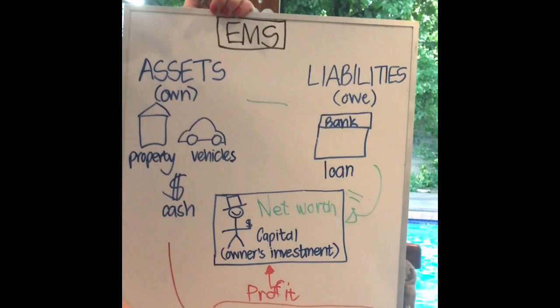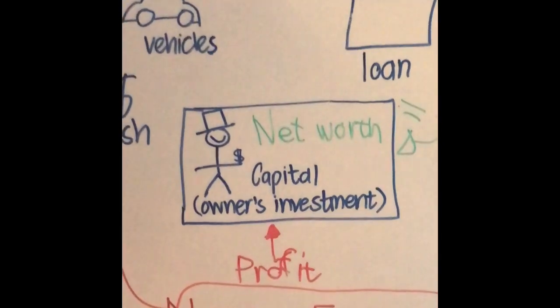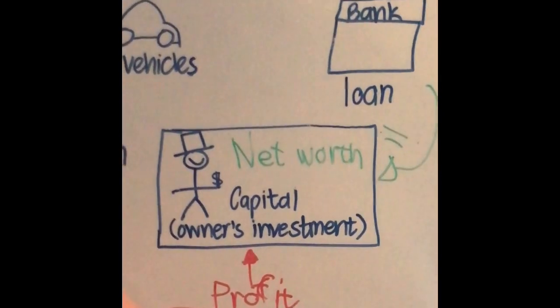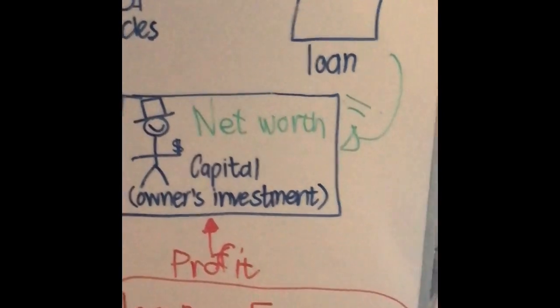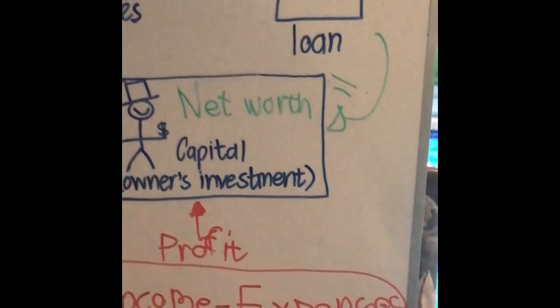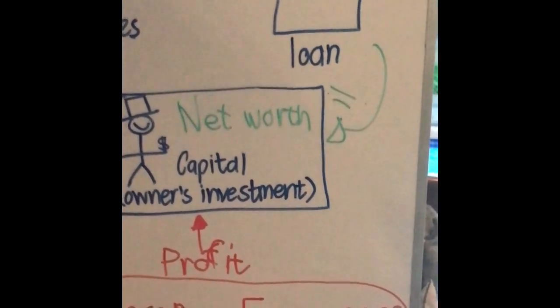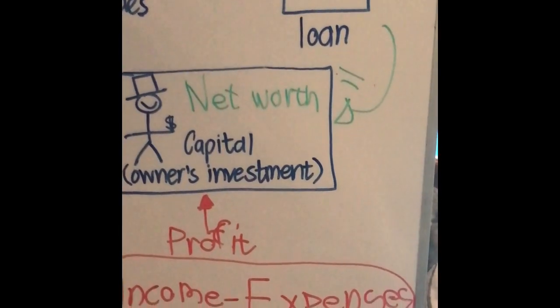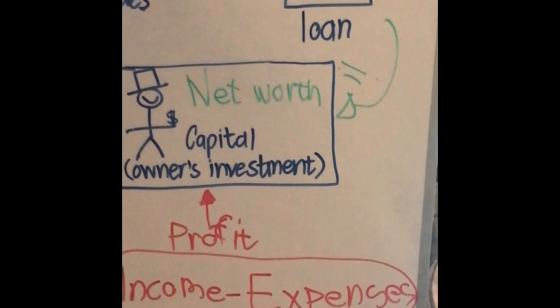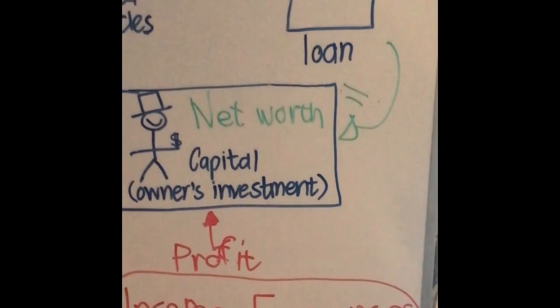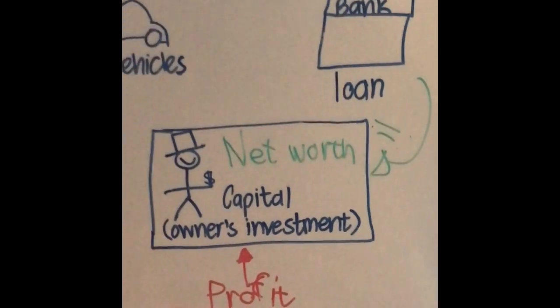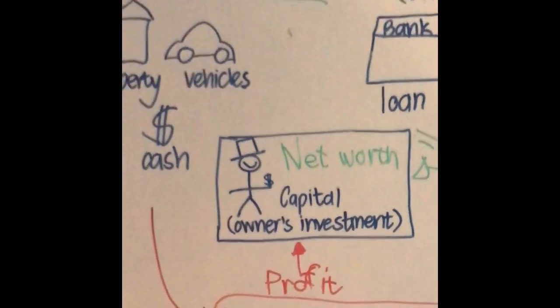Variable expenses are going to change over time, whereas fixed expenses will stay exactly the same. Fixed expenses would be things like your rent, whereas a variable expense might be your telephone account — that will be different every single month. Hopefully you now understand these concepts a little better.